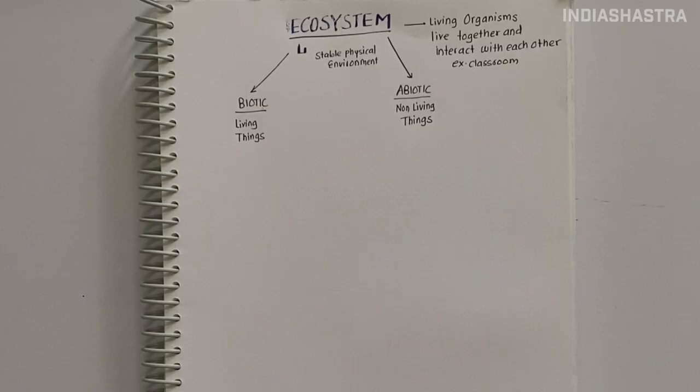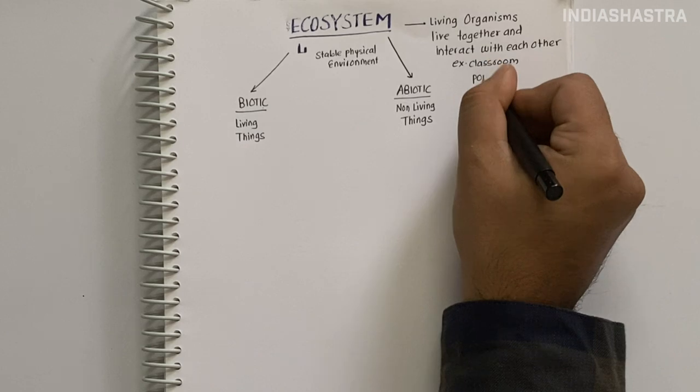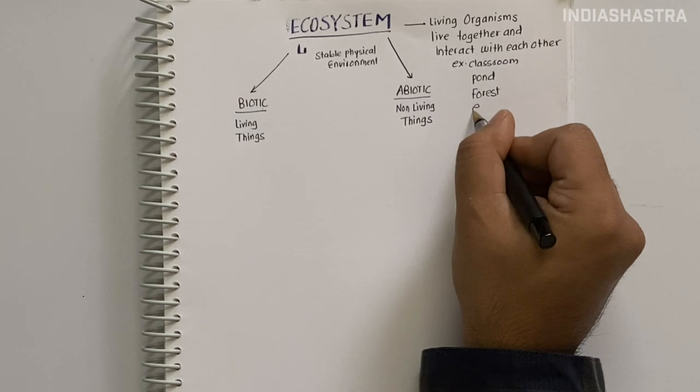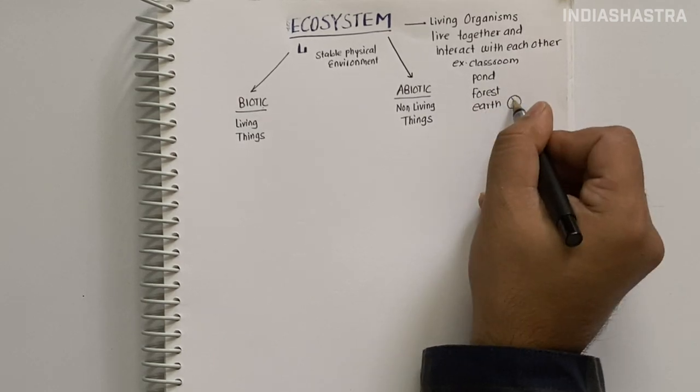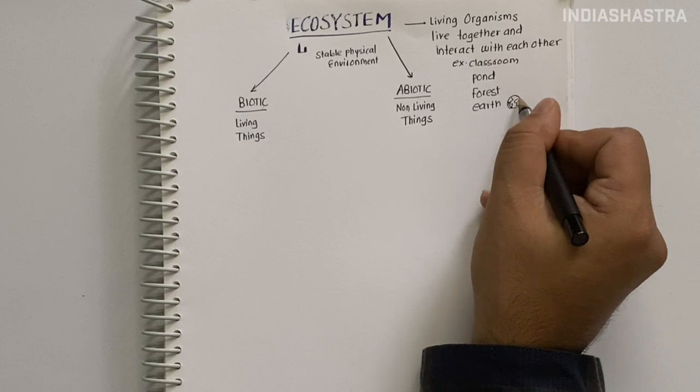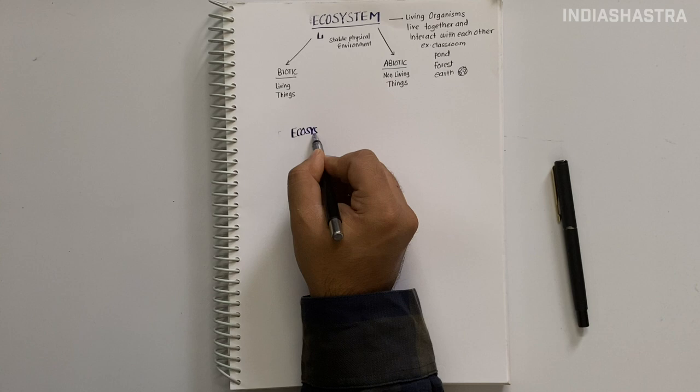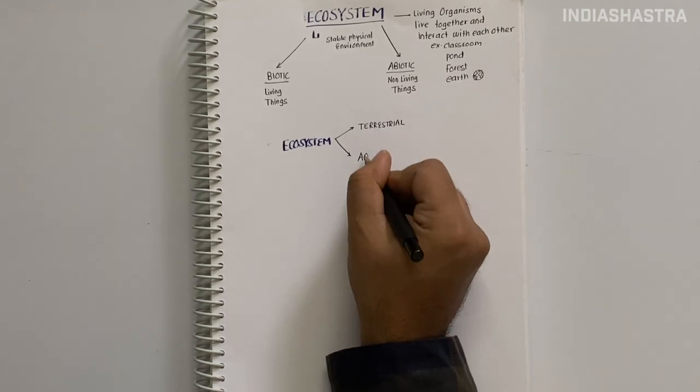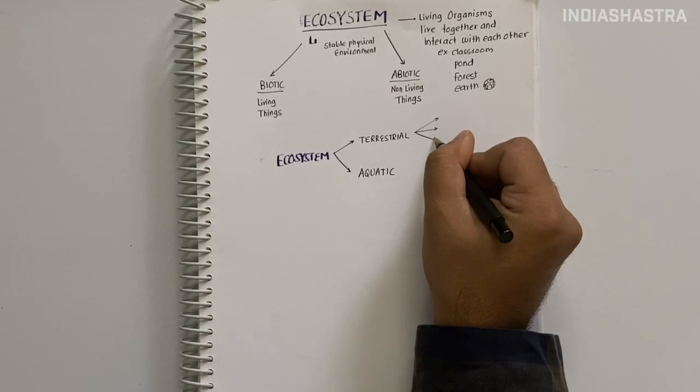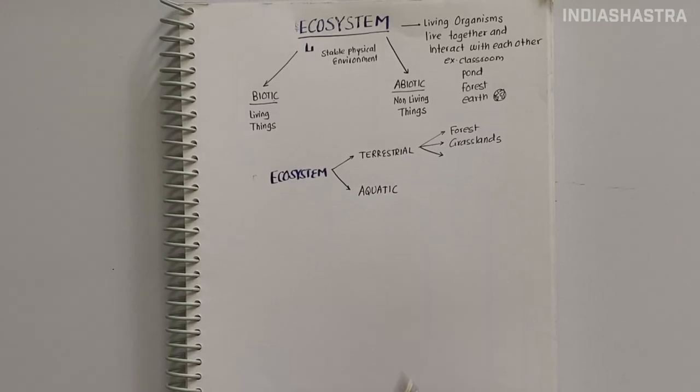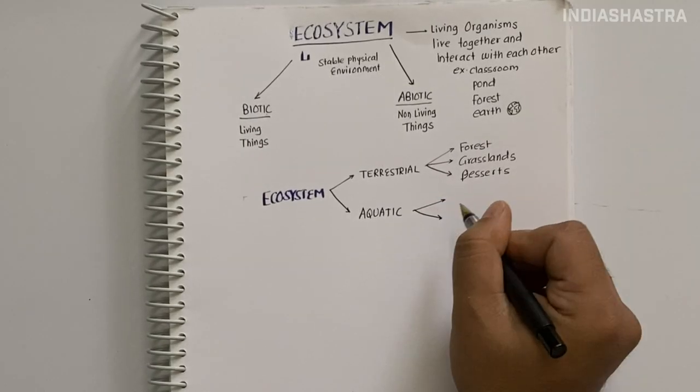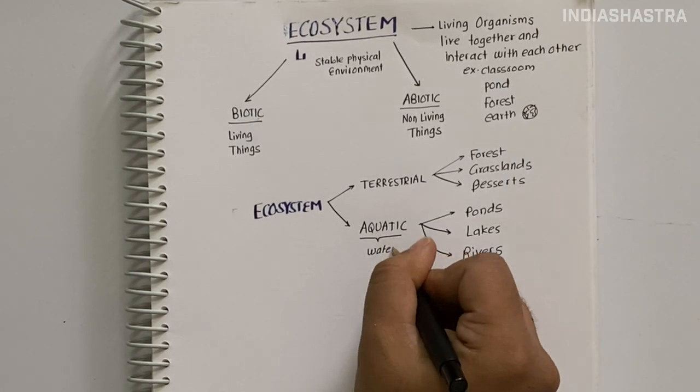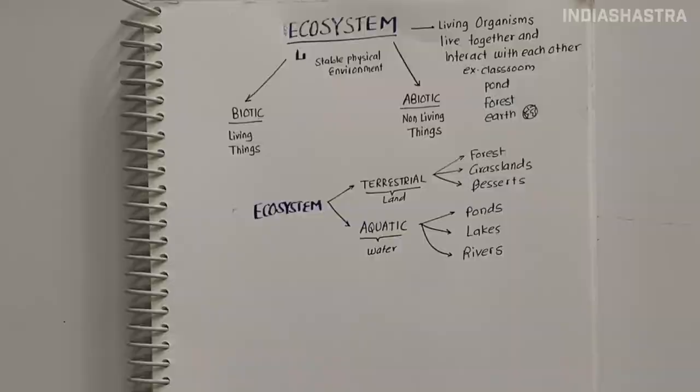The ecosystem is when biotic and abiotic components have a stable physical environment and interact with each other. Biotic means living things, abiotic means non-living things. If your classroom is an ecosystem, you and friends are biotic components and benches, duster, chalk are abiotic components. An ecosystem can be a small pond, a whole forest or the whole Earth. To study ecosystems clearly, we define them into terrestrial and aquatic categories.